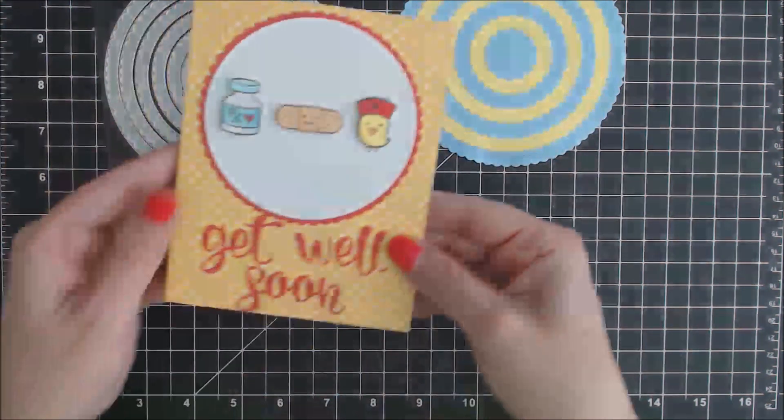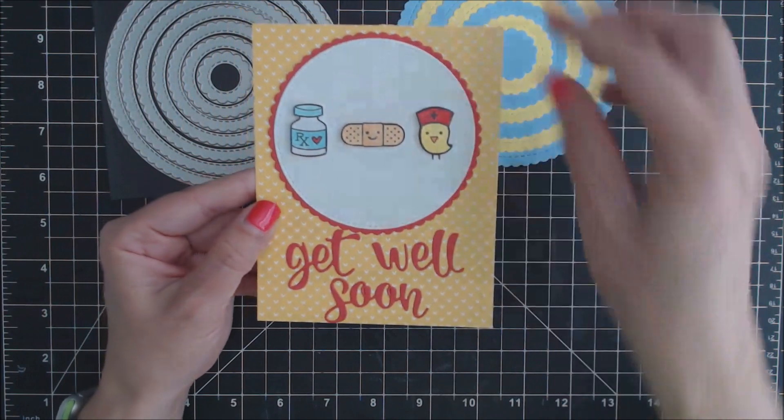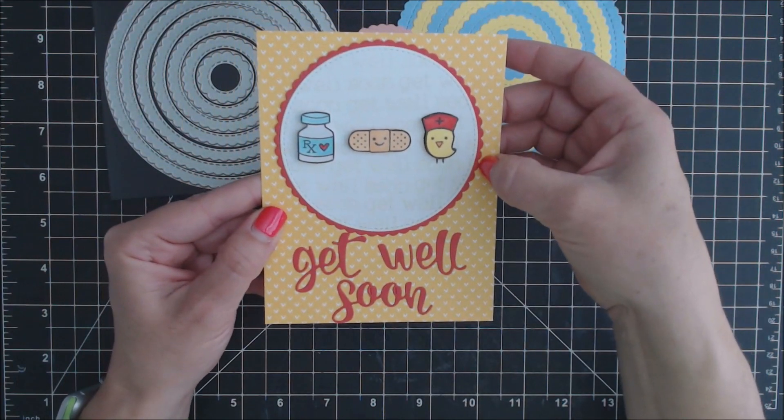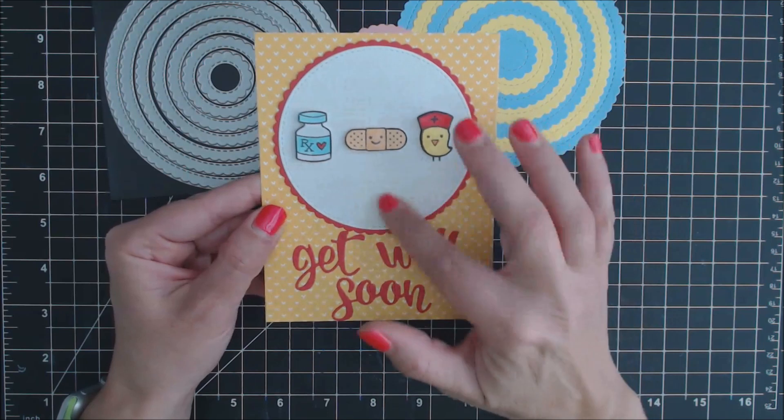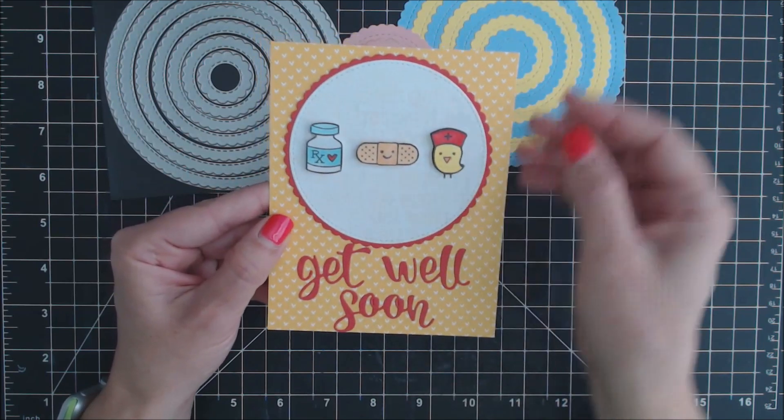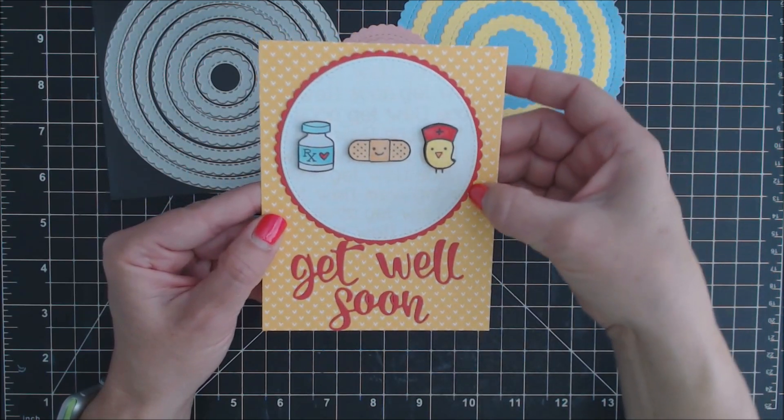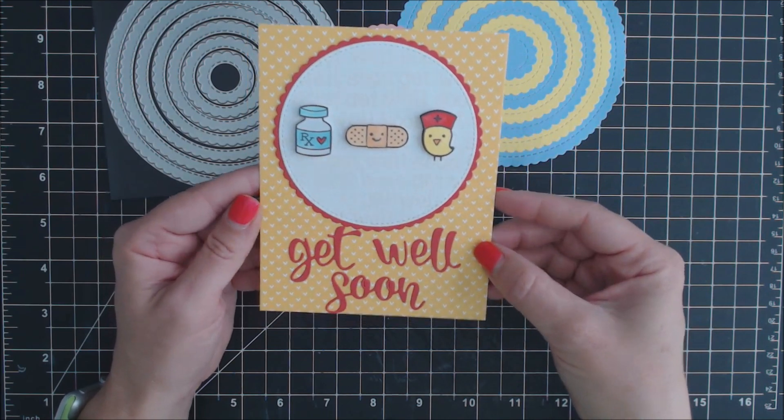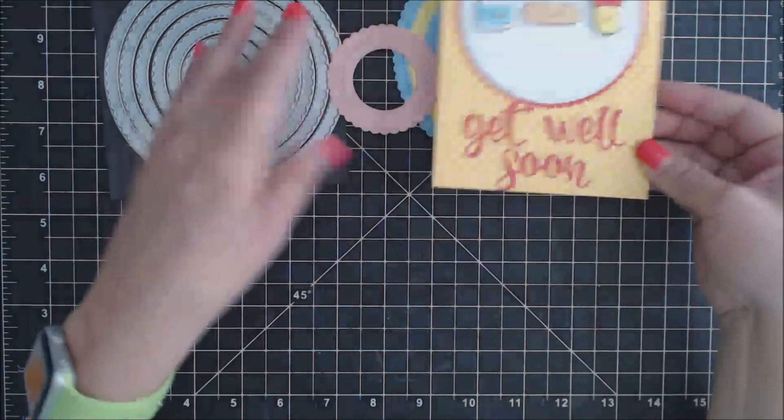I've created a card using these dies. I cut out one of the stitched scallop circles and then overlaid it with just a circle stitched circle die just to give it this cute little scallop detail on the card.